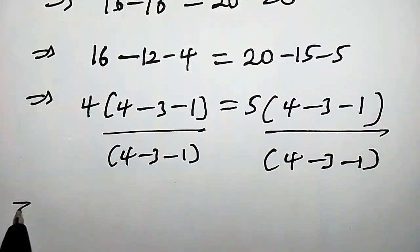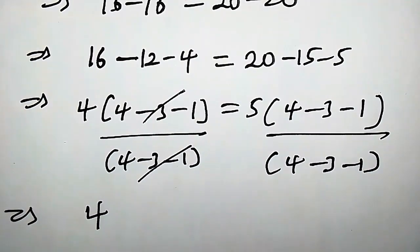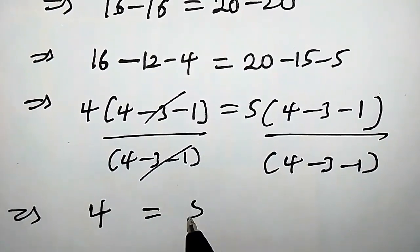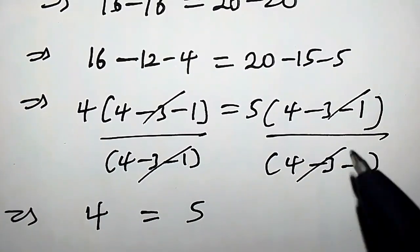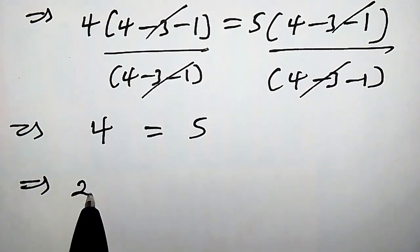So this implies that we have 4, because this guy takes care of this, equals 5, because this guy also takes care of this.